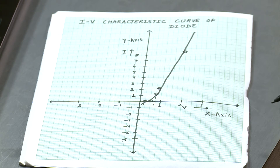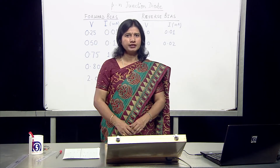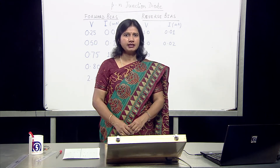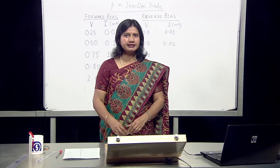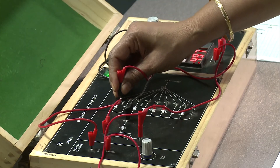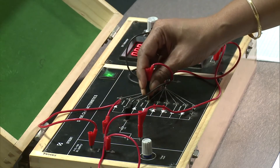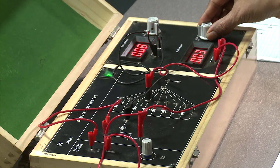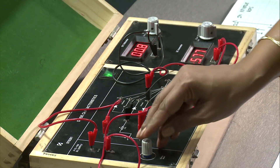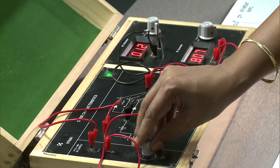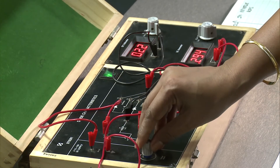Similarly, we will plot the reverse bias characteristic curve. Let's take the readings of the junction diode in reverse bias. The circuit is now changed to reverse bias. In the reverse bias, the current is in the microampere region. Now as we increase the voltage, what is observed is that for an increase in voltage, the current doesn't change much.